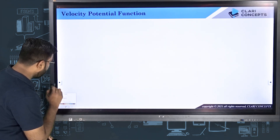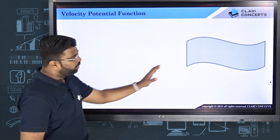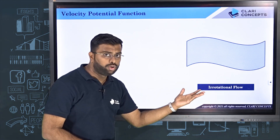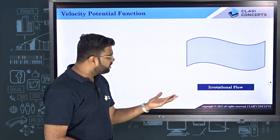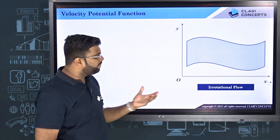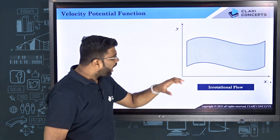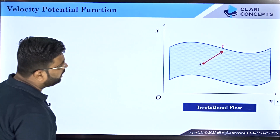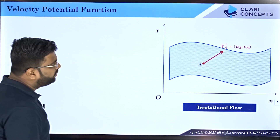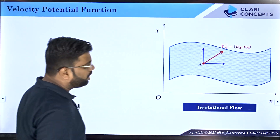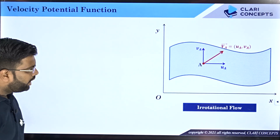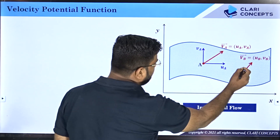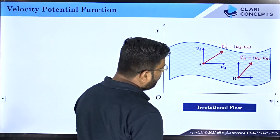Let us say I have a fluid flow flowing in three-dimensional space and the flow is irrotational in nature — that means there is no rotationally involved in this flow. I have the Cartesian coordinate system x and y to represent the flow. At point A I have velocity of a particle V_A, and the components will be u_A and v_A along x and y. Similarly at point B, the velocity is V_B with components u_B and v_B.